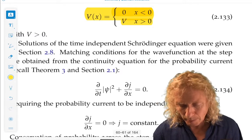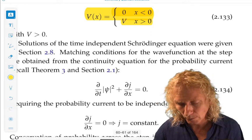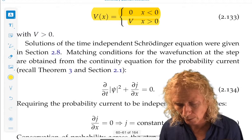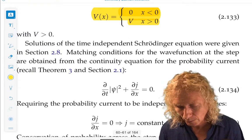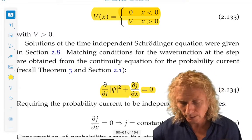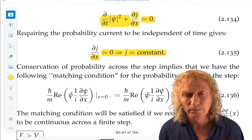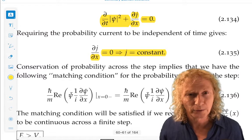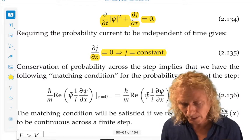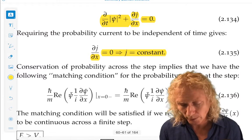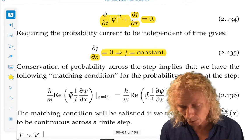Now, the probability current is going to be very useful in our considerations of this. So if you go back and look at the continuity equation that it obeys, you can see the probability current is constant. So across the step, that is on either side of x equals zero, the probability current should be equal.